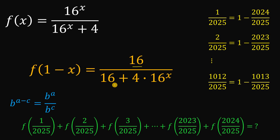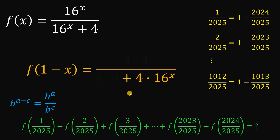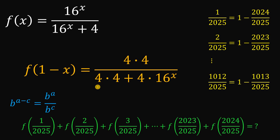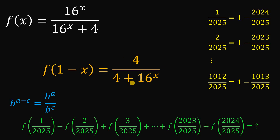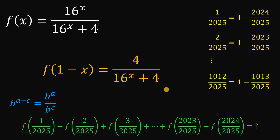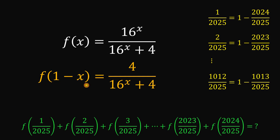Now 16 is just 4 squared, or 4 times 4. This gives us a common factor of 4 in the numerator and denominator, which we can cancel. So this gives us 4 over 4 plus 16 raised to the power of x. Since addition is commutative, we can rewrite this as 4 over 16 raised to the power of x plus 4. We have now found the value of f of 1 minus x.